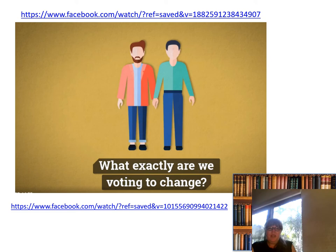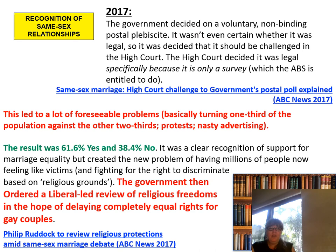There are two clips attached here that look at the plebiscite and what it actually means — well worth your time. Moving forward to 2017: the government actually decided on a voluntary non-binding postal plebiscite. They'd been thinking about it for a couple of years and decided to go ahead.